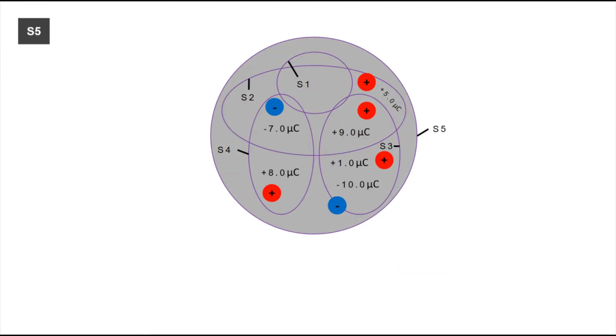For S5, all of the charges used earlier are enclosed, as well as the other four surfaces. To get the total electric flux, we will add all of the charges up, and the resulting electric flux will be 6 µC.